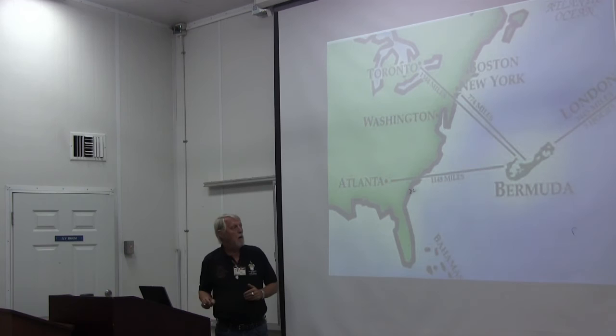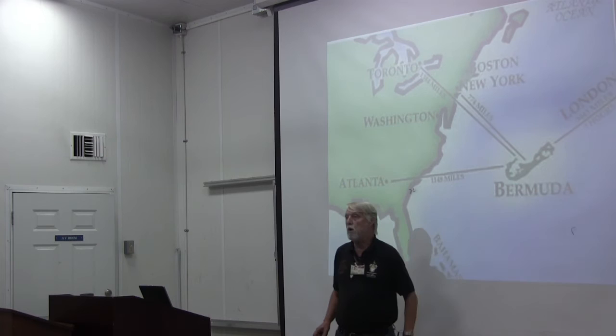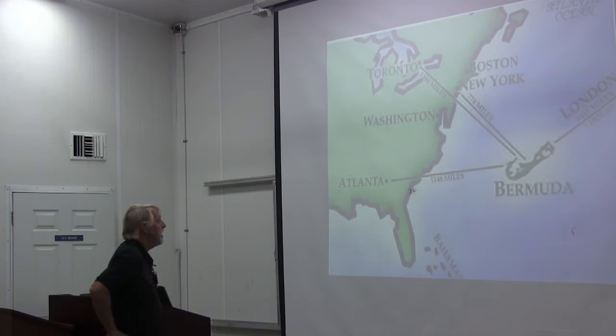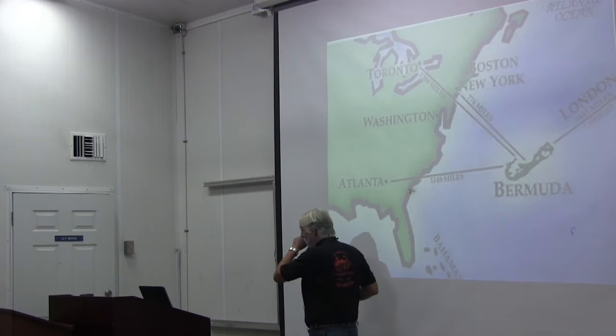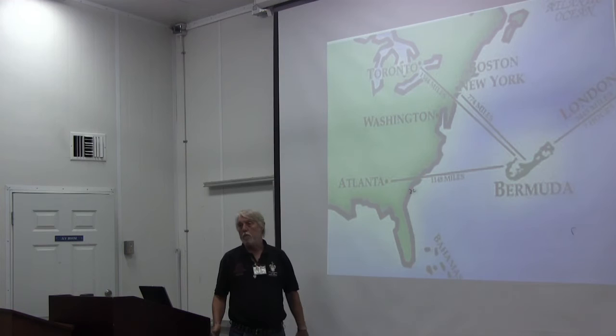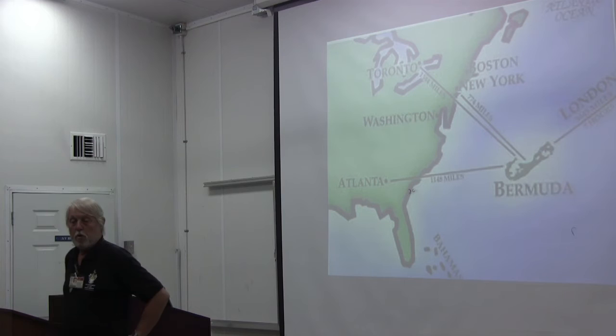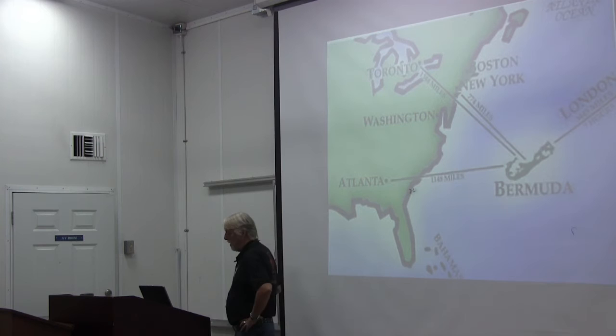Very often we think of Bermuda as part of the West Indies, but if you look at it, Bermuda is actually off of the Carolinas, out in the Atlantic Ocean. As you get to know island ecology better, you would expect them to be relatively depauperate in their biota — and you'd be right about that. They're physically not very different from many of the West Indies, and especially the Bahamas.